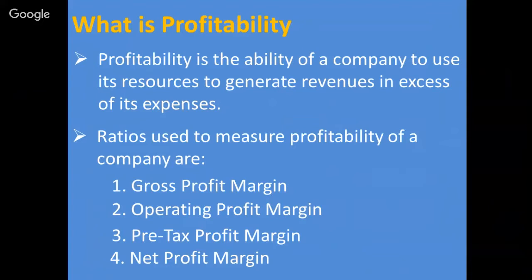یہ چار ratios یا یہ چار margins ہمیں بتائیں گے کہ company profit میں جا رہی ہے یا نقصان میں۔ اور یاد رہے کہ یہ چاروں ratios یا چاروں margins کی values اگر higher ہیں تو company اچھی ہے۔